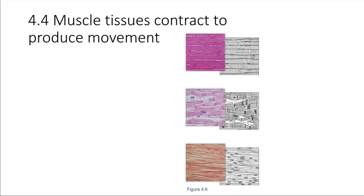This ends up allowing us to do things like move our skeletons. It also allows a lot of other movement throughout the body that we're maybe not even consciously paying attention to. So muscle tissue comes in three different varieties.